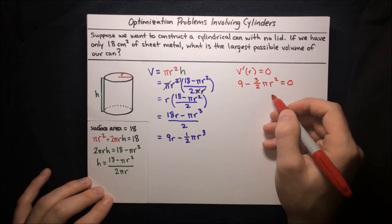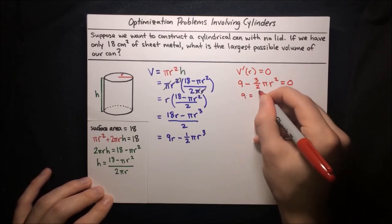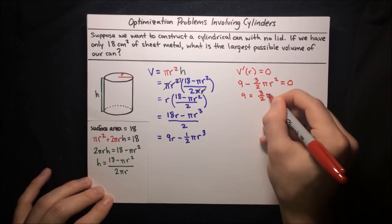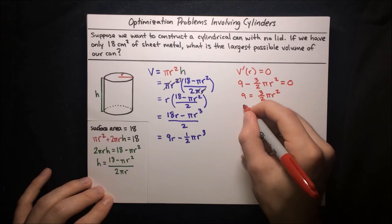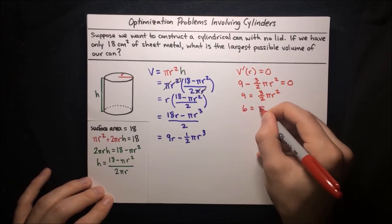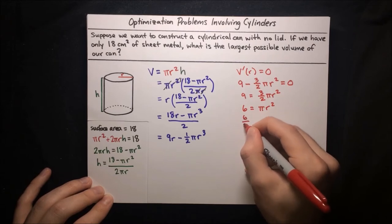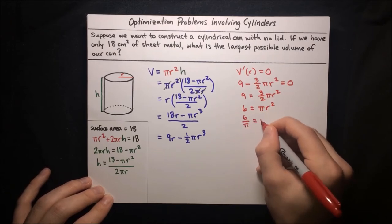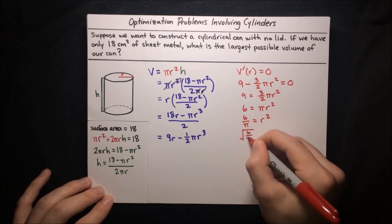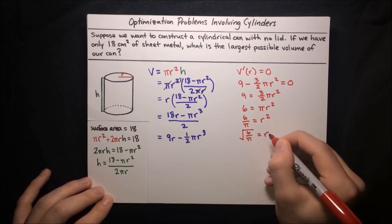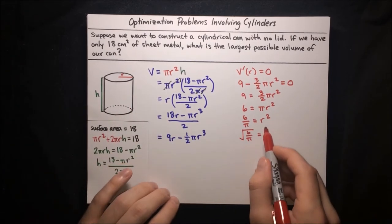Solving for r: add three-halves pi r squared to both sides to get 9 equals three-halves pi r squared. Multiply both sides by two-thirds to get 6 equals pi r squared. Divide by pi to get 6 over pi equals r squared, and take the positive square root: r equals the square root of 6 over pi. Positive square root because r is a physical quantity. This is our stationary point.